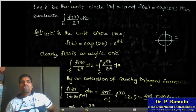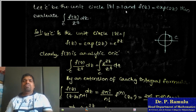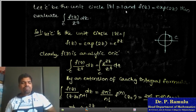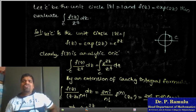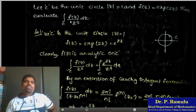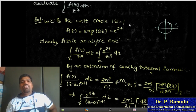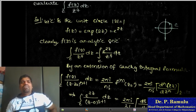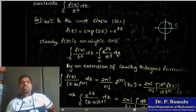Next problem. Let C be the unit circle mod z = 1 and f(z) = e^(2z). Evaluate the integration over C of f(z)/z^4 dz. Since f(z) = e^(2z) is analytic on C, we can apply the extended Cauchy integral formula. The integral of e^(2z)/z^4 dz can be written using the extended Cauchy integral formula.